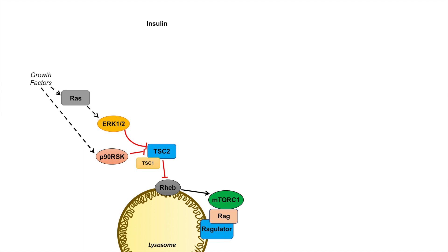Another very important growth factor is insulin. Insulin leads to the activation of PI3K through the insulin signaling cascade. Once PI3K becomes activated, it leads to the activation of PDK1, which ultimately leads to the phosphorylation and activation of AKT. AKT is also an inhibitor of TSC2. So ultimately, insulin, through its ability to activate AKT, leads to the inhibition of TSC2 and ultimately the activation of RHEB and mTOR signaling.